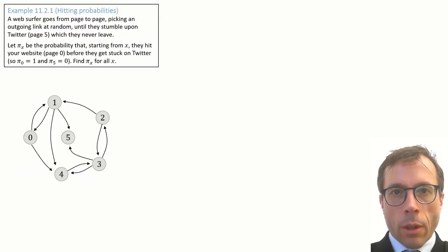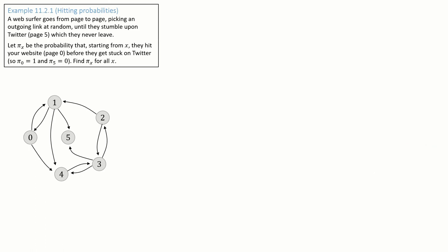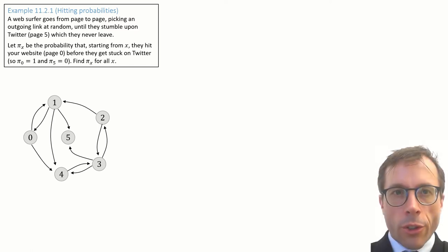Here's the question. It's about what's called hitting probabilities. Pause the video and read. This question is asking us to find pi x, the probability that starting from state x, the random surfer hits my website, site 0, before hitting Twitter, site 5.